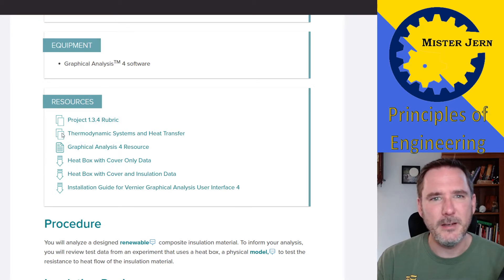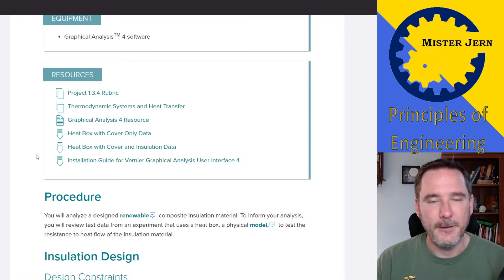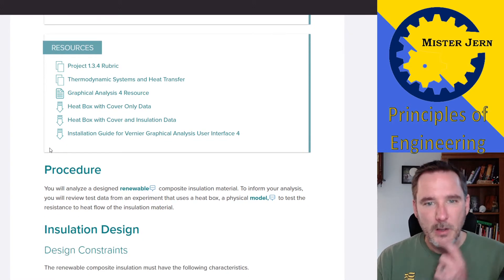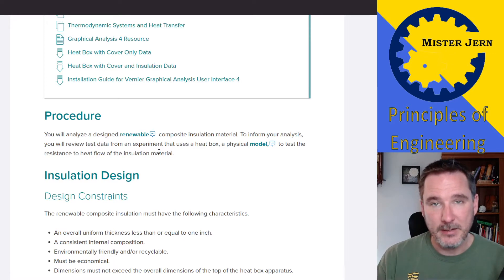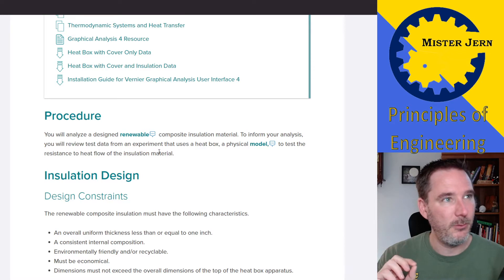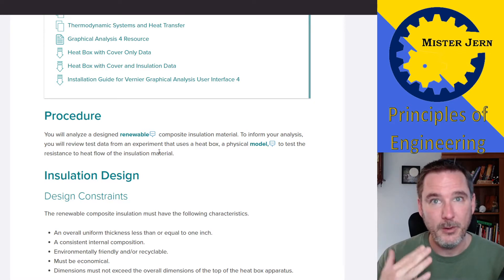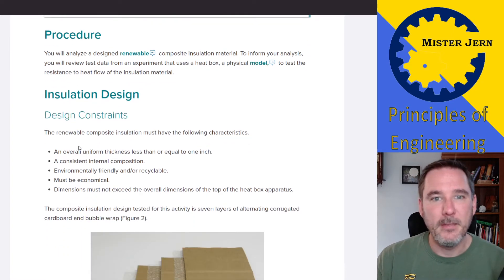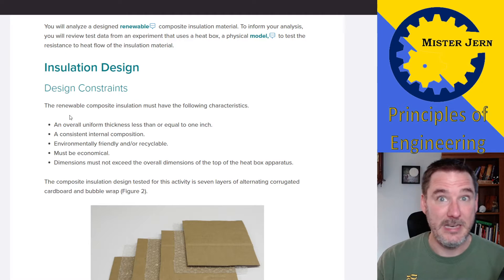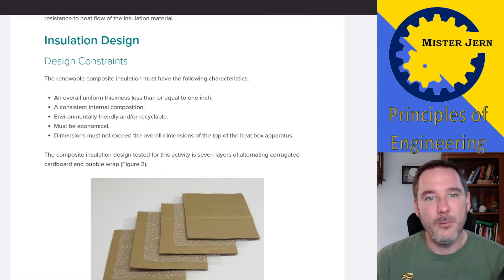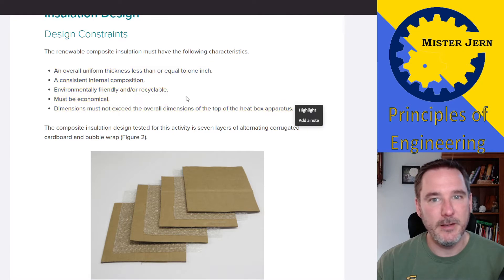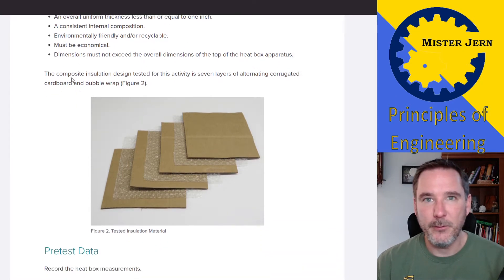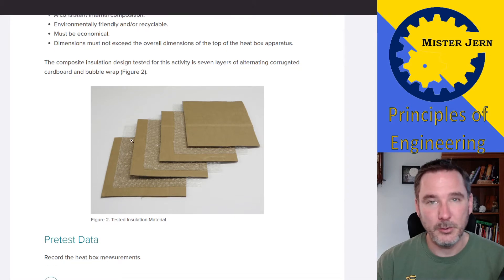The rubric is important, of course, and resources are interspersed as needed throughout the website. Here is your actual procedure — make sure you read all this and get it down. Remember, in your engineering notebook you want to give a lot of context; you're not just going to put things in out of place or out of context. The insulation design — which you're unfortunately not going to do yourself — involves seven layers of alternating cardboard and bubble wrap.